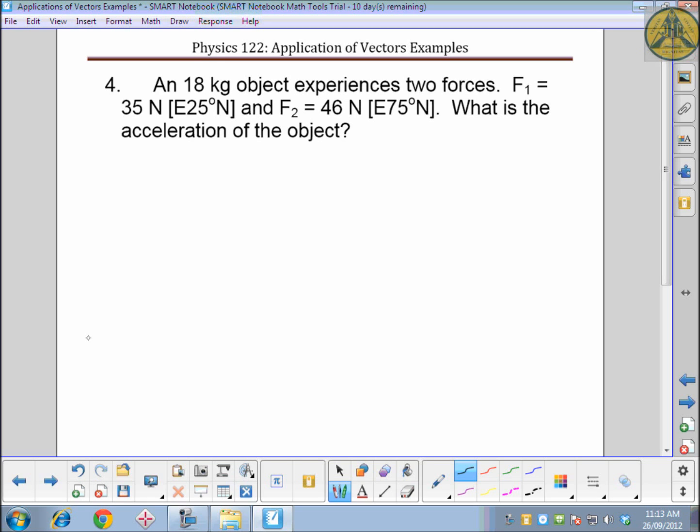18-kilogram object experiences two forces pulling on it. One is 35 newtons east 25 degrees north. So think of your east as your horizontal, north as your vertical if you want. Second force is 46 newtons east 75 degrees north. What's that acceleration? So as soon as you see problems with forces and accelerations, first thought should be Newton's second law, and that's exactly what we're going to do here.